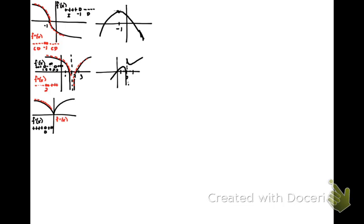At 0, the second derivative is vertical for all intents and purposes. After 0, it's positive. So we're expecting a change in concavity at 0, from concave down to concave up, with a function that's always increasing. A possible sketch of the original function would be a function that's increasing into 0, changing concavity, and then continuing to increase.